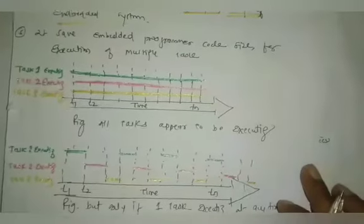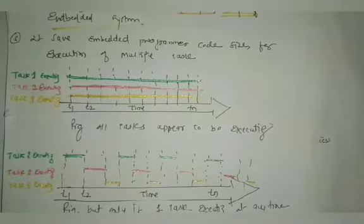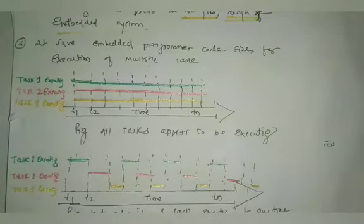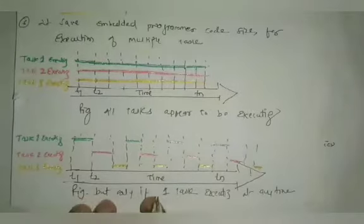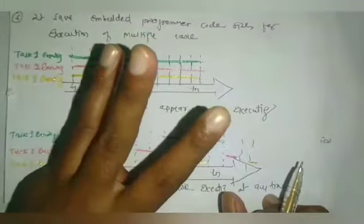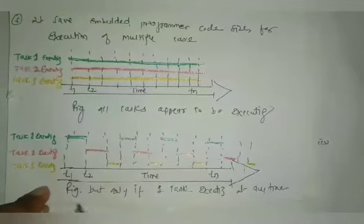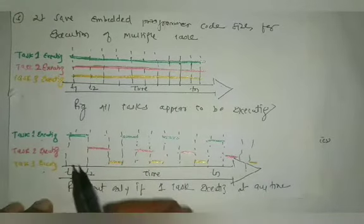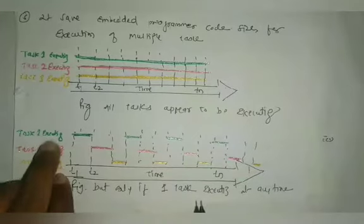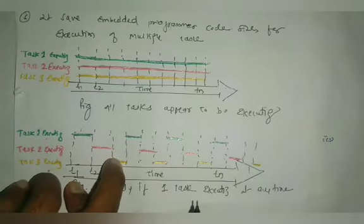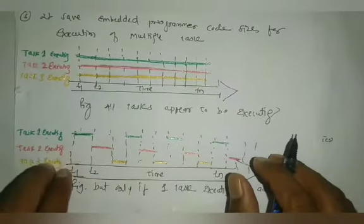Suppose multitasking is not provided. In that case, only one task executes at a time out of three tasks. So task one, task two, and task three — task one starts execution, while task two and task three are in waiting state.